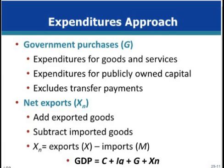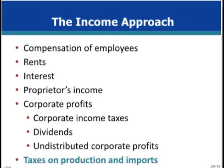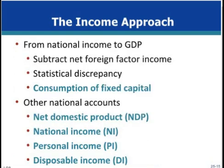The income approach allocates expenditures as income to those responsible for producing the output. The major component is national income, which is made up of employee compensation, rents, interest, proprietor's income, corporate profits, and taxes on production and imports. The largest share is employee compensation, which includes wages and salaries paid by both businesses and government, as well as supplements such as benefits paid by employers on behalf of employees. Under the income approach, all expenditures on final goods and services flow as income to either private citizens or the government.